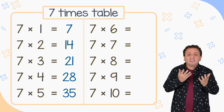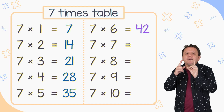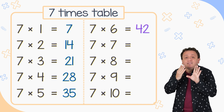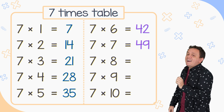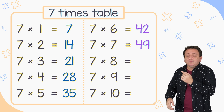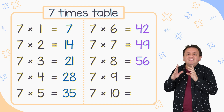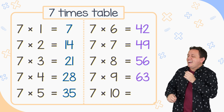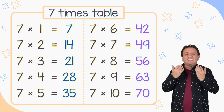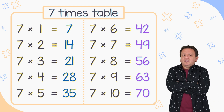7 times 6 equals 42. 7 times 7 — pay attention — 7 times 7 equals 49. 7 times 8 is equal to 56. 7 times 9 is equal to 63. And 7 times 10 equals 70. Do you think that this table is difficult?